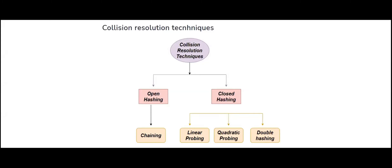Welcome back to another session on data structures. Today I'll be discussing collision resolution techniques. Collision occurs when two keys map to the same index of the hash table. There are various ways to resolve collisions. The first one is open hashing and the second one is closed hashing. Open hashing is also called closed addressing, and closed hashing is also called open addressing. Today I'll be discussing double hashing, which comes under the category of closed hashing.